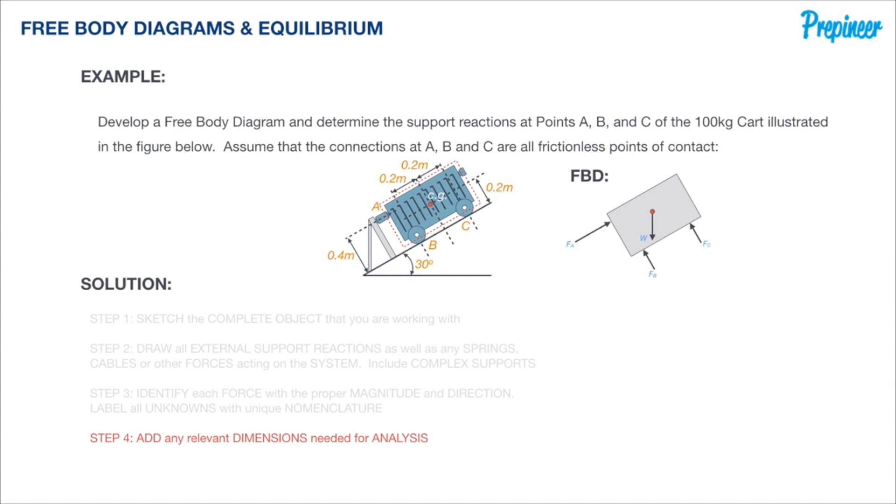Now that we have all of our forces identified, we can begin adding in all the pertinent dimensional data that will help us actually solve for these unknowns. We just simply bring over all the dimensional data. There really isn't a need to filter anything out. We never want to go back and pull dimensional data once we are into our analysis. Right there is our fully developed free body diagram.